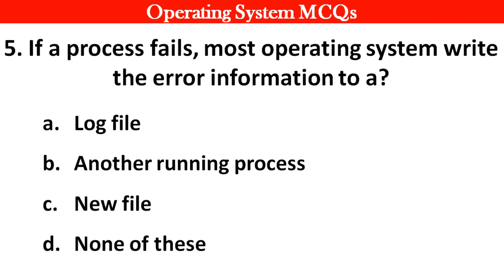Next question: If a process fails, most operating systems write the error information to a: Options: A. Log file. B. Another running process. C. New file. D. None of these. Right answer is option A: Log file.